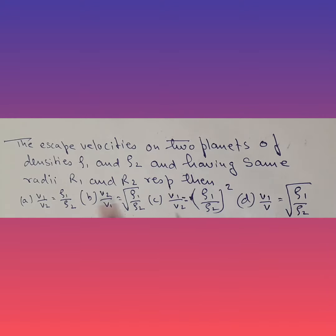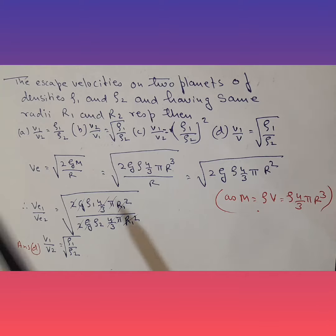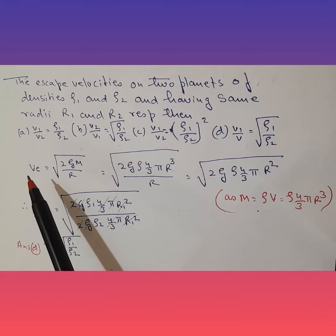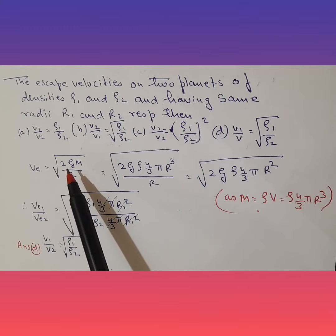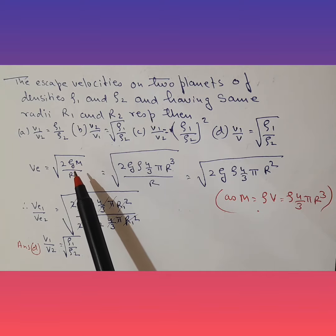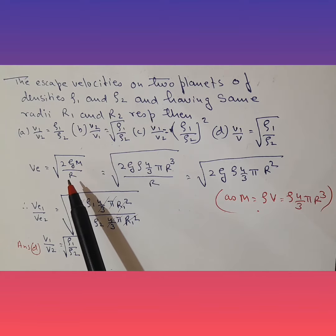So how do we approach? We know the formula for escape velocity: it is √(2GM/R), where G is gravitational constant, M is mass of the planet, and R is radius of the planet.